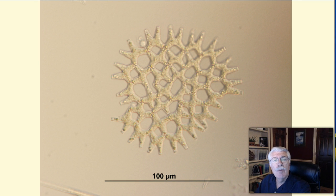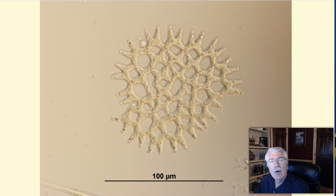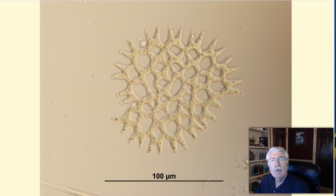While most are far too small to be seen without a microscope, they can grow together in very large groups. In fact, the dark green color of many ponds is due to the presence of very large numbers of tiny algae.